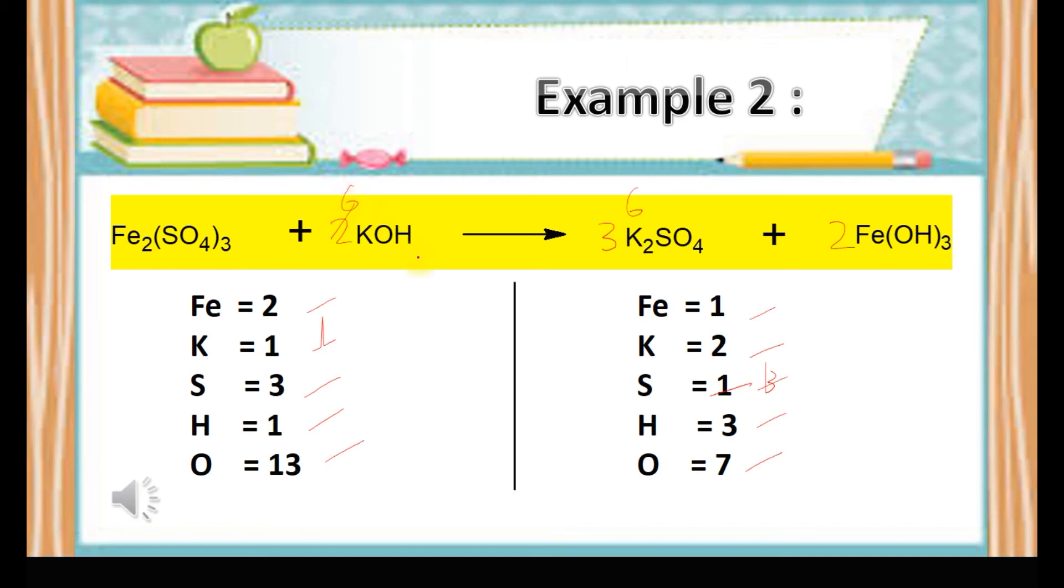Now go to step 4: balance the hydrogen atom. That is 6 on the left side, and on the right side also has 6. They are already balanced.